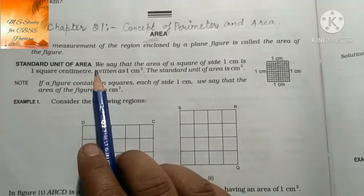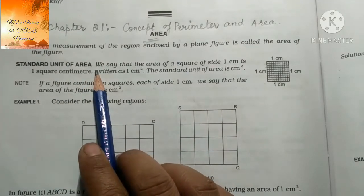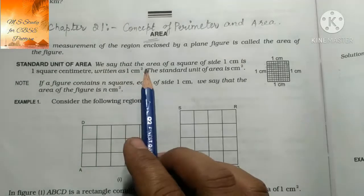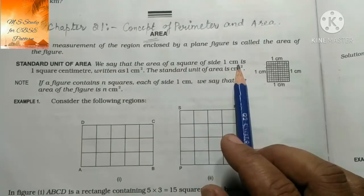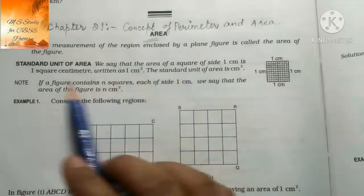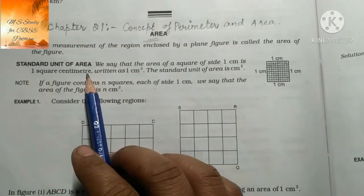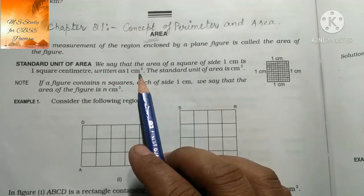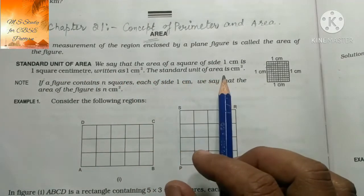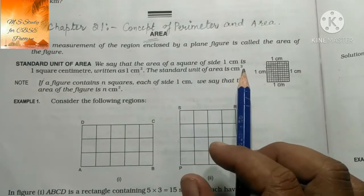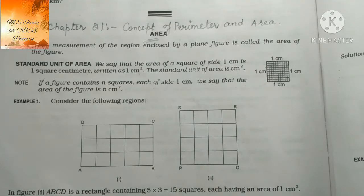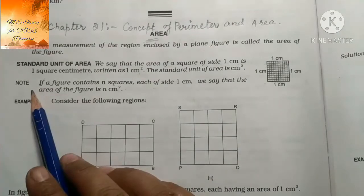उसके बाद है standard unit of area। Standard unit of area होता क्या है? We say that the area of a square of side 1 cm is 1 cm², written as 1 cm². The standard unit of area is cm². अगर meter में दे रखा होगा तो meter square हो जाएगा, kilometer में दे रखा होगा तो kilometer square हो जाएगा। और यहाँ पर एक note हमें देखना है।